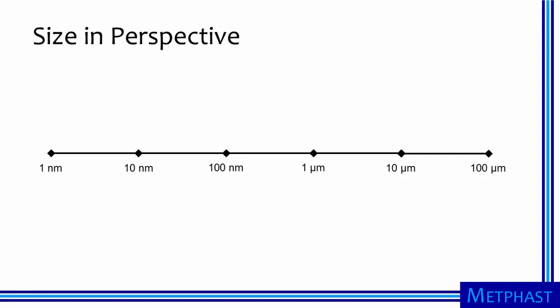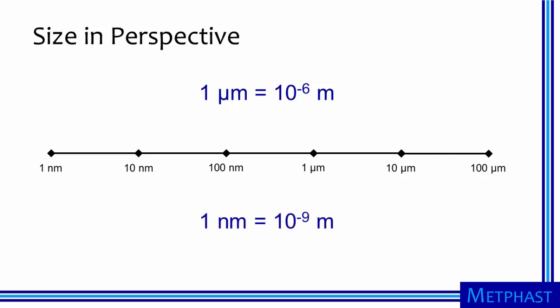We know that one micrometer is 1 times 10 to the minus sixth meter, and that one nanometer is 1 times 10 to the minus ninth meter. So there are six orders of magnitude difference between one micrometer and one meter, and nine orders of magnitude difference between one nanometer and one meter.